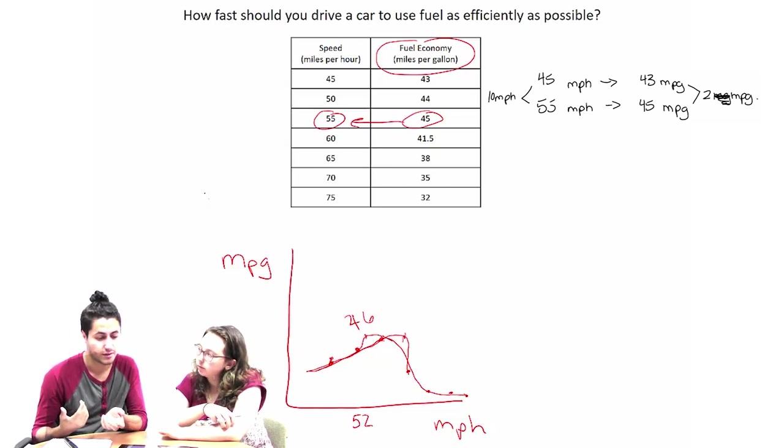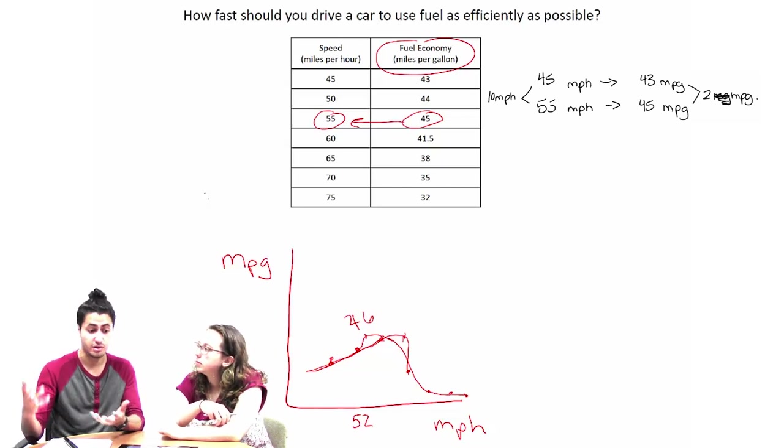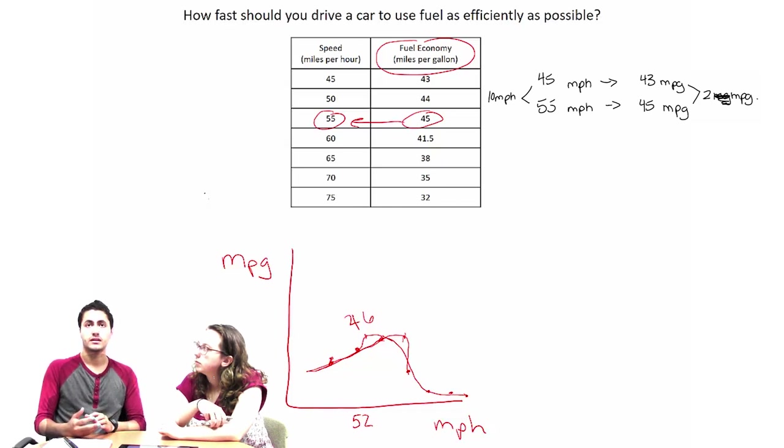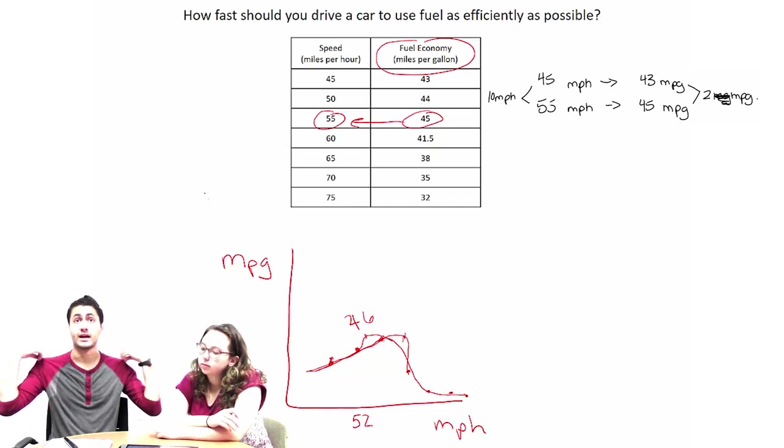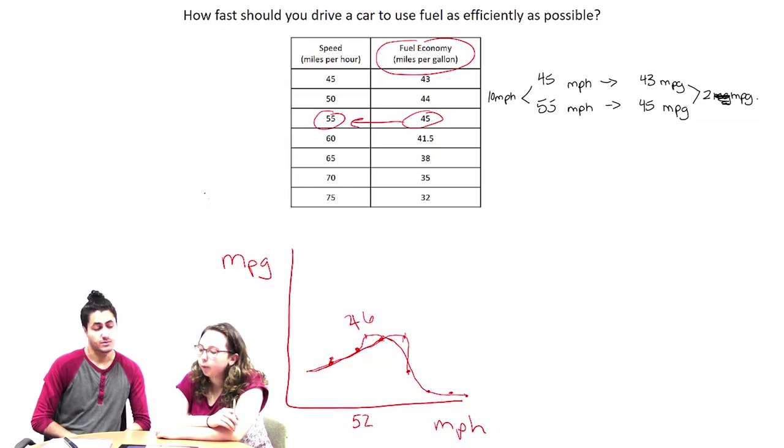Because then, at that point, we'll have, instead of seven, we might have 30 points. And that might be a little bit more accurate to look at because we have more information to analyze. That's what I'm thinking.